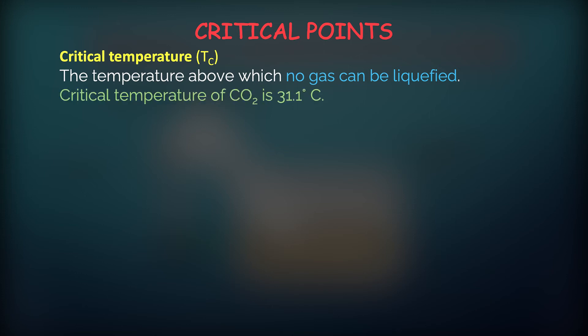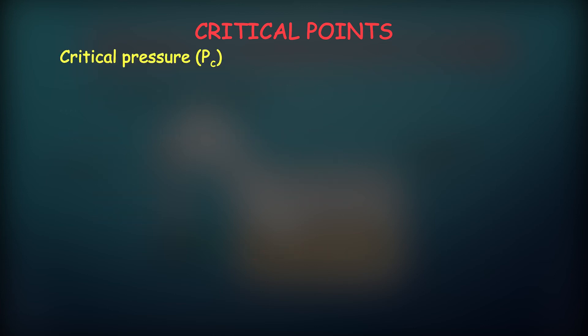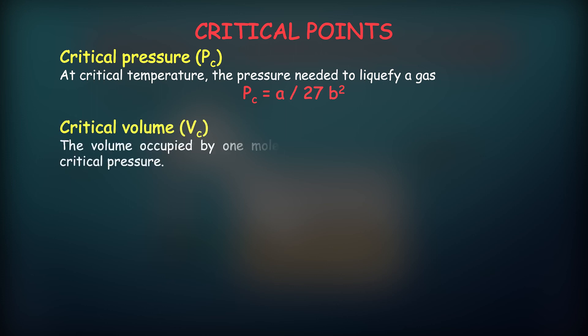Critical pressure and critical temperature are key critical point parameters. Critical volume is the volume occupied by one mole of gas at critical temperature and critical pressure.